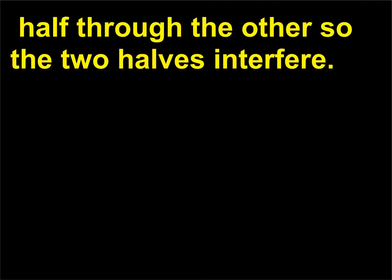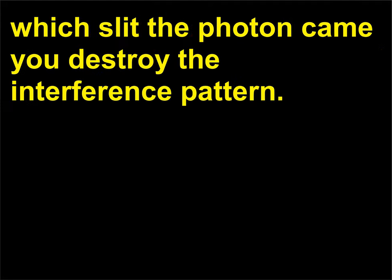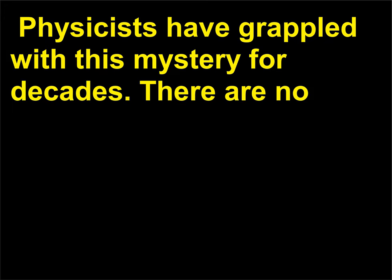Particles can't split, with half going through one slit and half through the other so the two halves interfere. If you try to modify the experiment so you can tell which slit the photon came through, you destroy the interference pattern. Physicists have grappled with this mystery for decades.